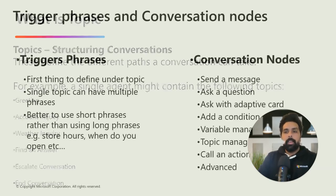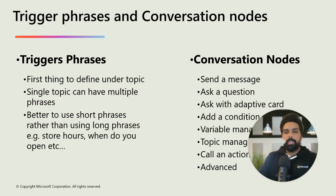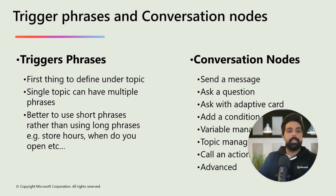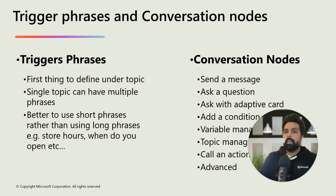Now let's understand the key attributes and different options for trigger phrases and conversation nodes before we jump to entities. Trigger phrases are the first thing to define under topics and one topic can have multiple phrases. It is better to use short phrases rather than long ones — for example, 'store hours' or 'when do you open' rather than a very long sentence. A conversation node is the response to your trigger phrases. You can have a send message, ask a question, ask with an adaptive card, conditions, variables, topic management, or call an action like a Power Automate flow.